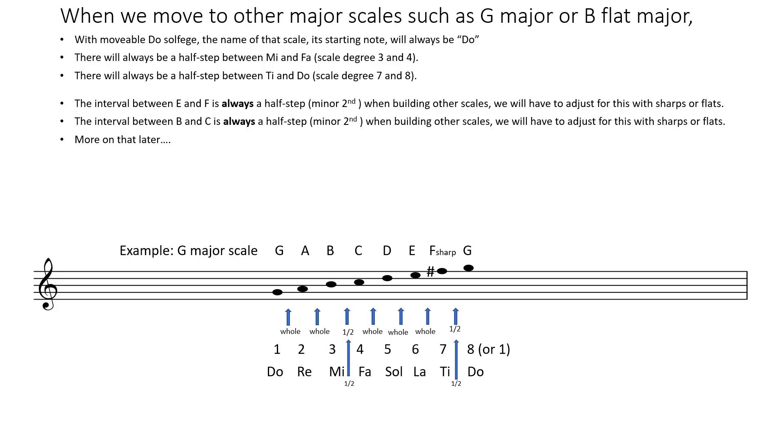When we move to other scales, such as G major or B flat or any other major scale, with movable Do solfege, the name of that scale, its starting note, is always Do. So if it's a G major scale, the starting note is G, and G is Do.